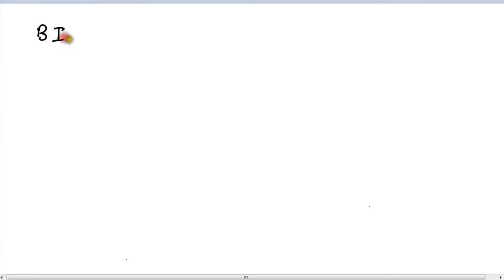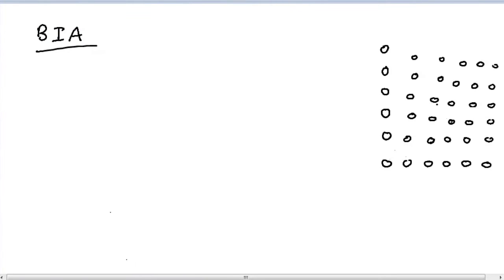Today I'm going to be talking about the Basic Incremental Algorithm, otherwise known as the BIA. This is a line drawing algorithm, and in order for it to work we need to satisfy three different conditions.